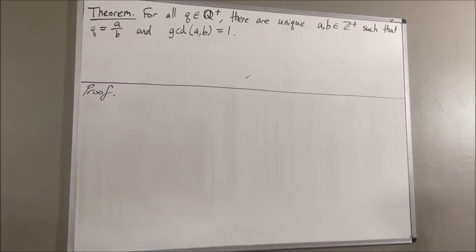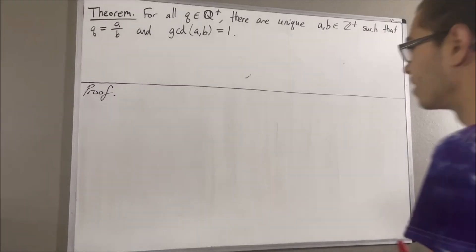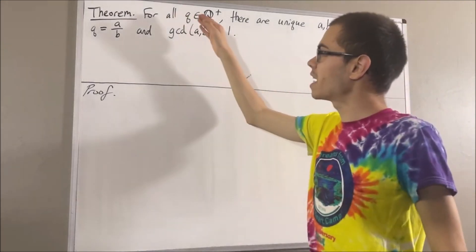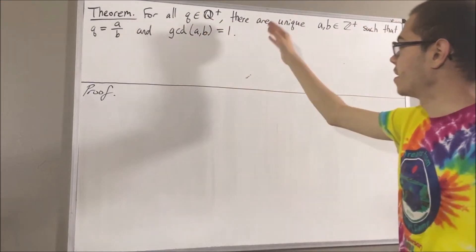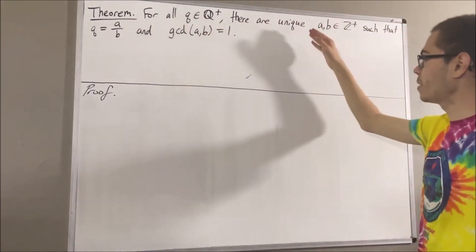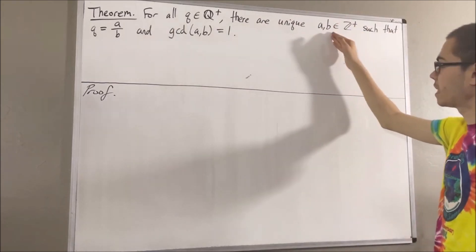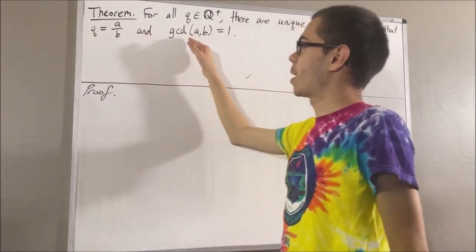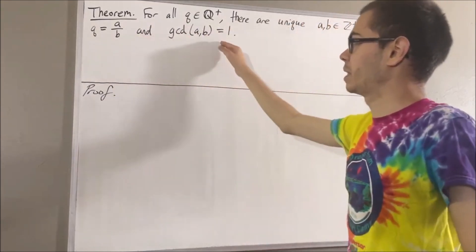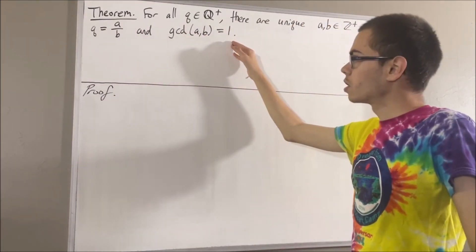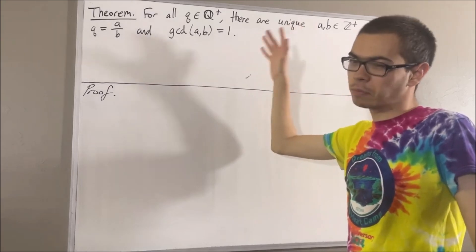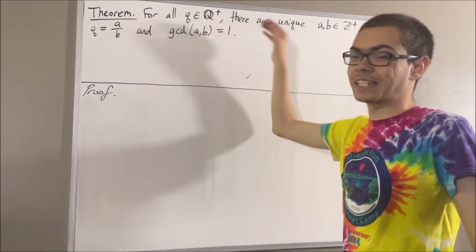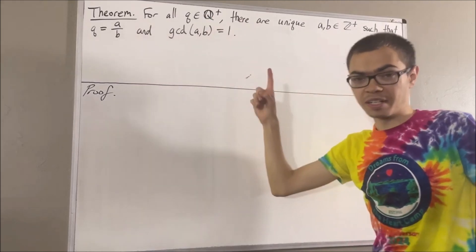In this video, we are going to prove the following theorem: for all positive rational numbers Q, there are a unique pair of positive integers A and B such that Q is equal to A over B, and the greatest common divisor of A and B is equal to 1. We're essentially trying to prove that every positive rational number has exactly one simplest form.